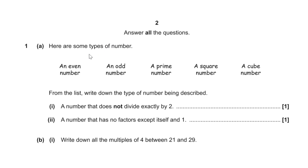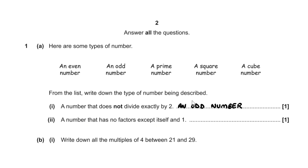Question 1. Here are some types of numbers: even, odd, prime, square, and cube. We have to write down the type of number being described. For the first part, a number that does not divide exactly by 2 — that's an odd number. For the second part, a number that has no factors except itself and 1 — that's a prime number.